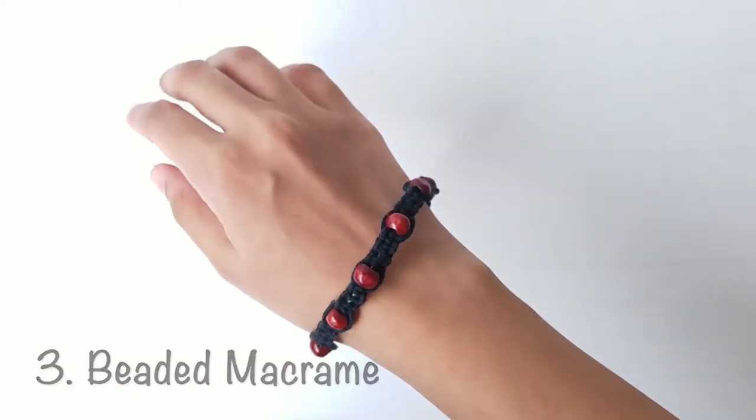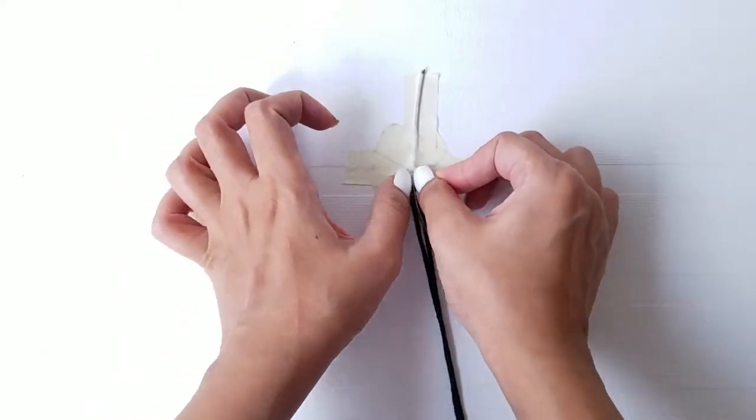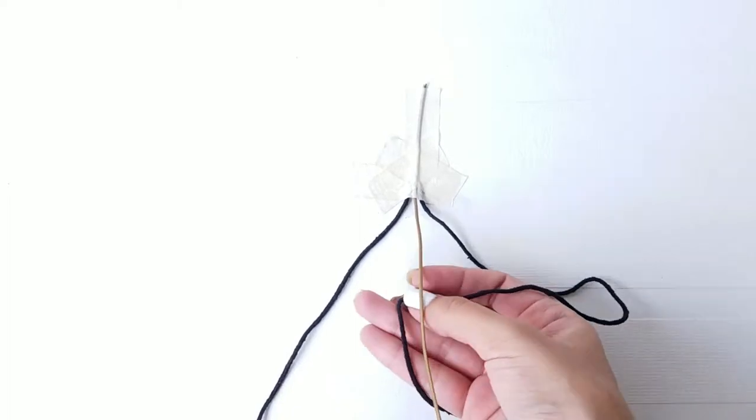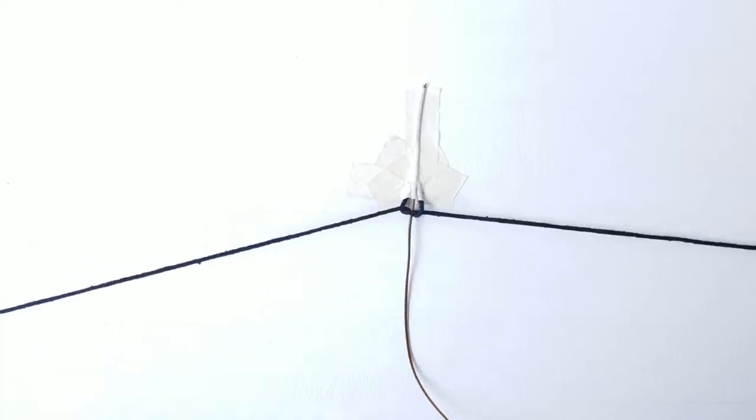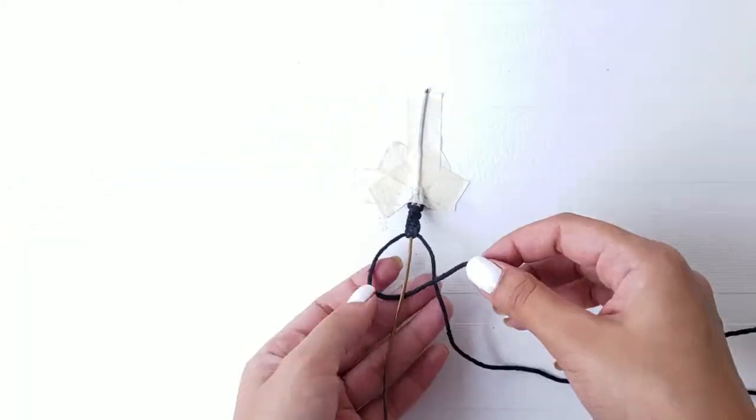To make this bracelet, tape three pieces of string on a flat surface. Take the right one under the center string and the left one over the center and through the loop, and pull it all together.